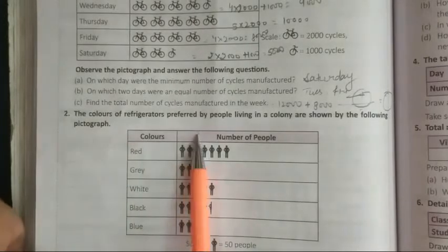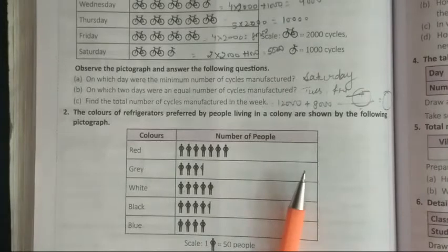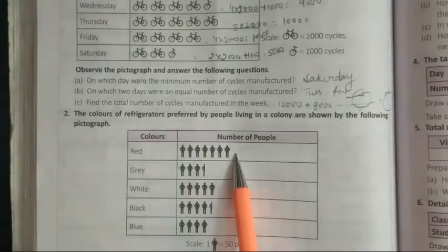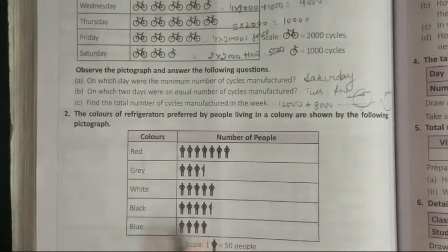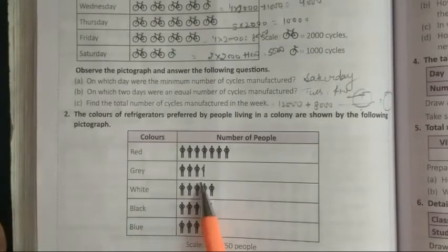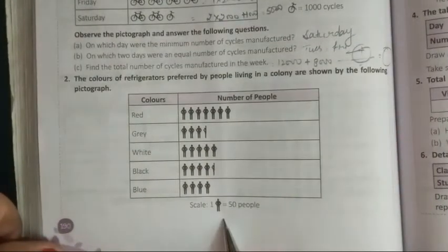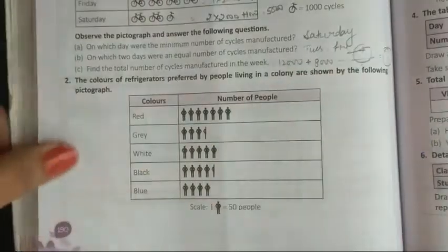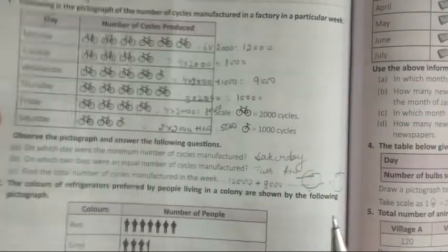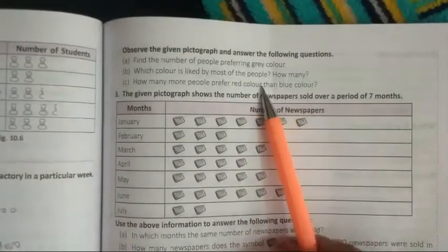Inho ne diya hai, refrigerator hai, prefer by people, living colonies, shown the following pictograph. Red color ke, itne number of people ko, pasand aayi hai, grey this, white this, black this, blue this. Complete people hai, woh 50 ko represent kar raha, aur jo is tarah half people hai, woh 25 ko represent karega, inho ne yaha scale de rakha hai. To jaise hum ne question number first kiya tha, isi tarah se aapko question number second karna hai, aur phir jo uske questions de rakhye hongi, question number second ke, unke answer dene hai.